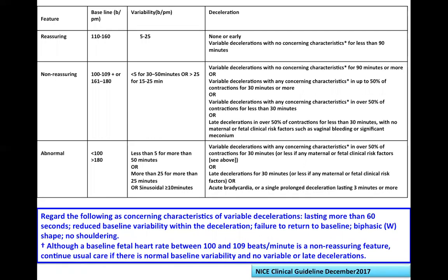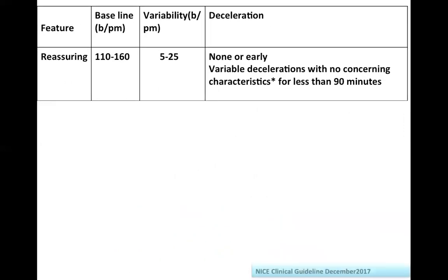When talking about reassuring features, the baseline should be within normal range - between 110 and 160. Variability should be between 5 and 25. There should be no deceleration, or only early deceleration, which is the mirror image of the contraction, occurring in less than 5% of decelerations and mimicking the contraction in shape.